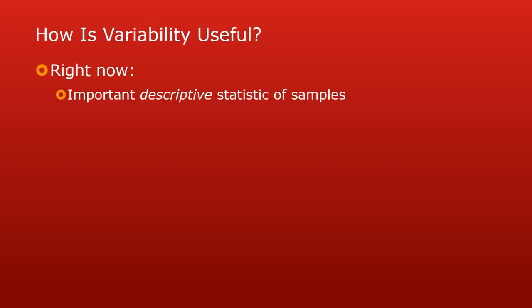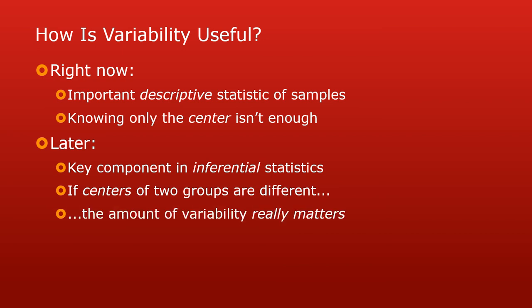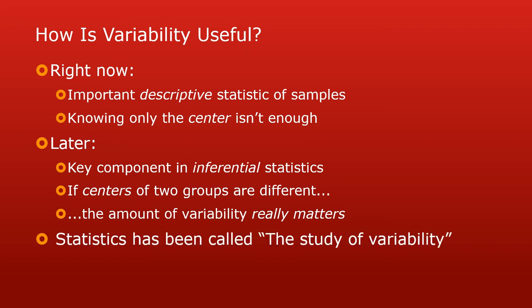Right now, variability is useful because it's an extremely important descriptive statistic of samples — knowing the center isn't enough. Later, variability will be important because it's a key component in inferential statistics. Inferential statistics are when you make inferences about the population based on what's in the sample. If the centers of two groups are different, the amount of variability around those two centers really matters in your attempt to guess what populations those two groups came from. Making that leap from predicting population values from your sample value requires a sophisticated understanding of variability. This is why statistics is sometimes called the study of variability.